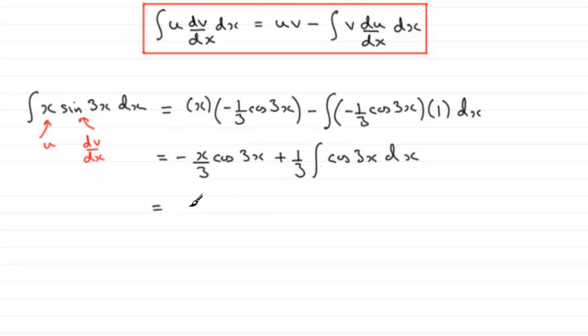Now we can just work at integrating that last term. But let's copy out the first term here, minus x over 3 cos 3x. And then we've got plus a third, and now to integrate cos 3x, that's going to be a third sine 3x.